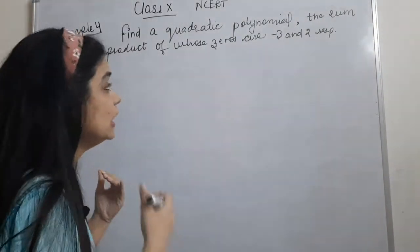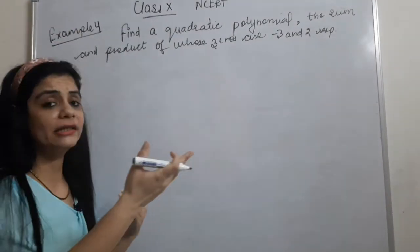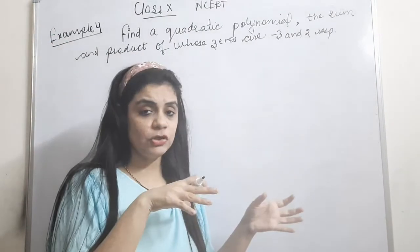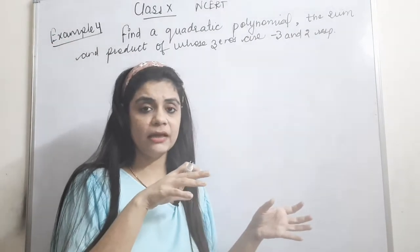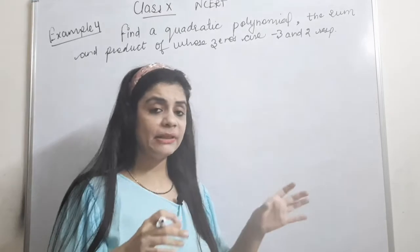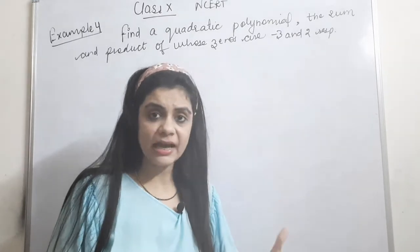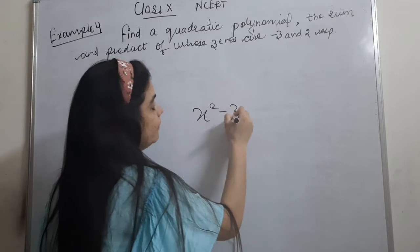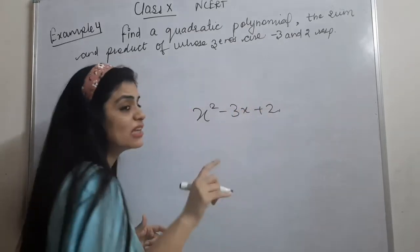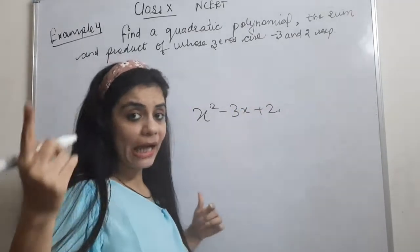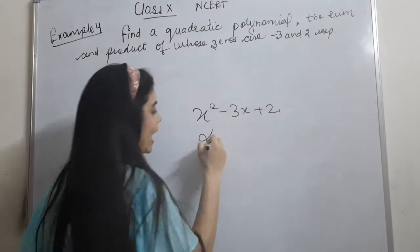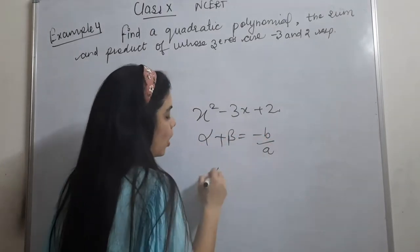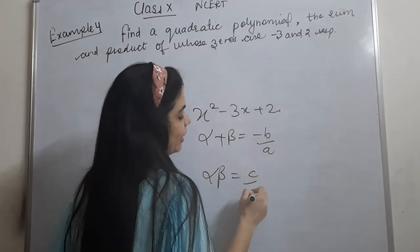Now from the sum and product, we have to get a quadratic polynomial. In the last video, I had told you that if a quadratic polynomial is given and you have to get the sum and product, I told you the formula for alpha plus beta and alpha times beta.